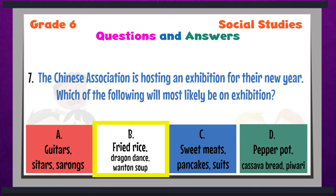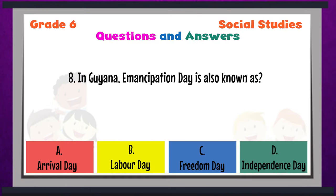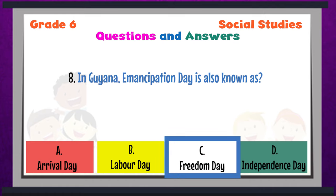Question 8: In Guyana, Emancipation Day is also known as A — Arrival Day; B — Labor Day; C — Freedom Day; or D — Independence Day. The answer to question 8 is C — Freedom Day. In Guyana, Emancipation Day is also known as Freedom Day. Arrival Day, Labor Day, and Independence Day are national holidays we observe in Guyana, but they do not refer to Emancipation Day — only Freedom Day does.